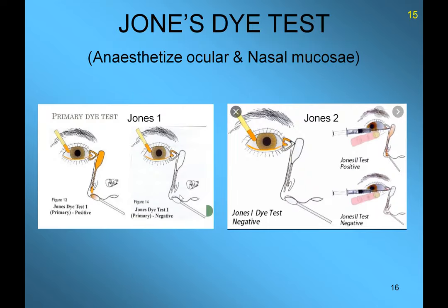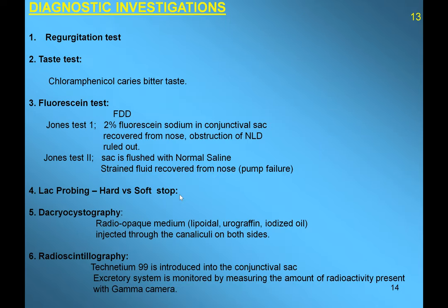Other tests include dacryocystography, where we instill a dye into the conjunctival sac and take radiographic photographs. Wherever the dye does not pass beyond a certain point, we can localize the site of obstruction, similar to an IVU. There is also scintigraphy where radioactivity is measured from the nasal cavity with a gamma camera, but this is practically not done.